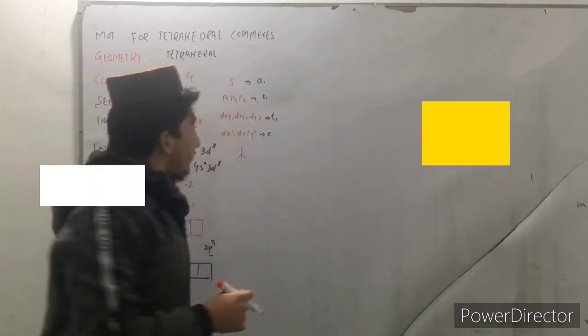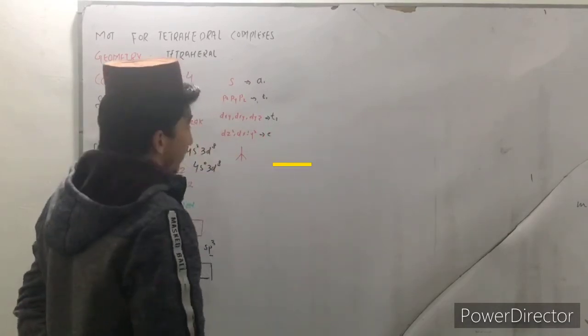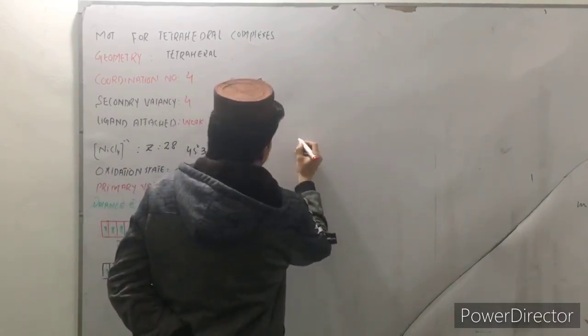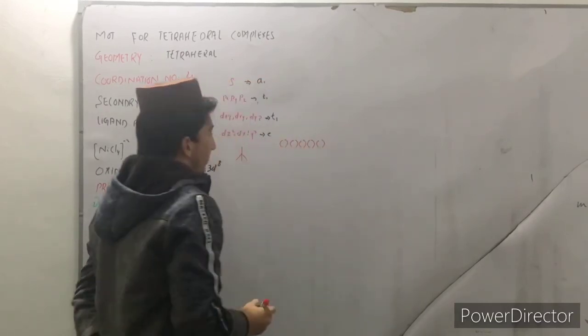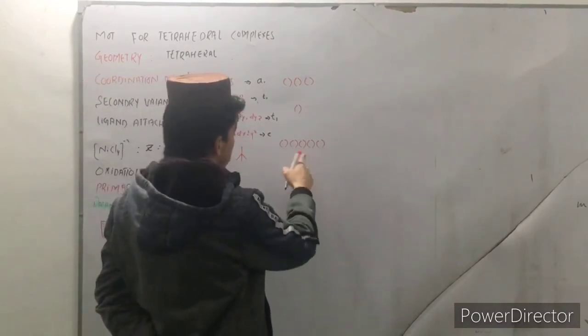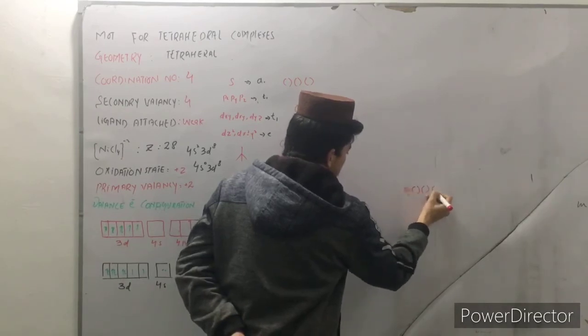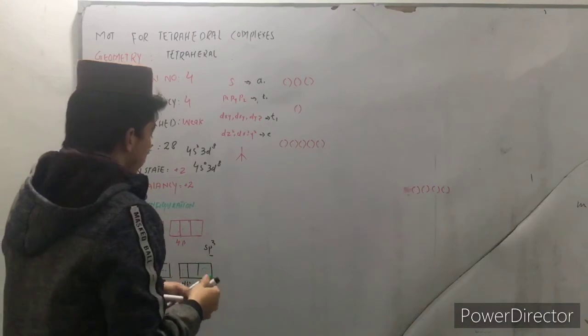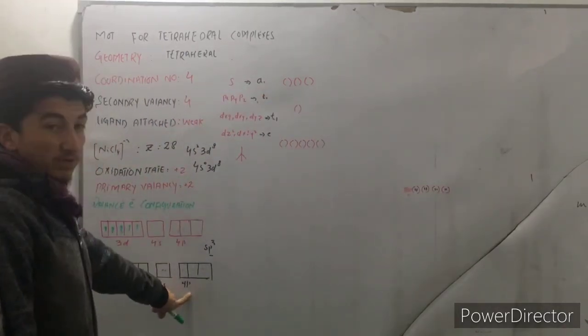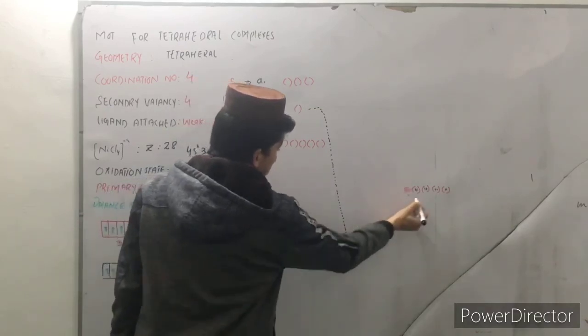Moving on to molecular orbital representation for this one. Molecular orbital theory in this case, first of all you have to write 5 d orbitals of 3d, so you have 1, 2, 3, 4, 5, one for 4s, three for 4p. This is the central metal and this is the orbital for the ligand which are 4 in number. Now you can see these have 8 electrons. In this case the electrons are shifted to 4s and 4p.